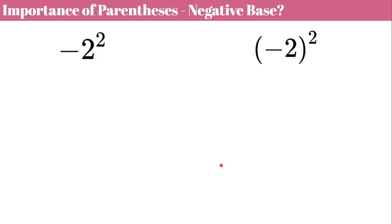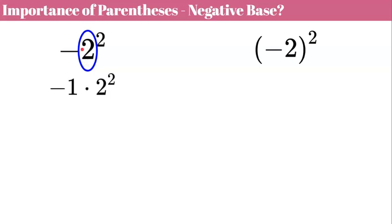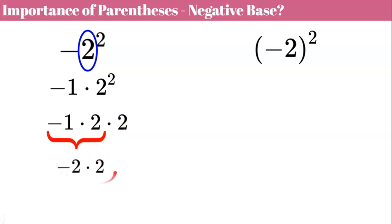Now let's talk about the importance of parentheses, especially with a negative base. These are two different expressions with two different numerical values. Without parentheses, the exponent two is only attached to a base of two — the negative sign is not part of the base. This actually represents negative one times two squared. So that's negative one times two times two: negative one times four equals negative four.